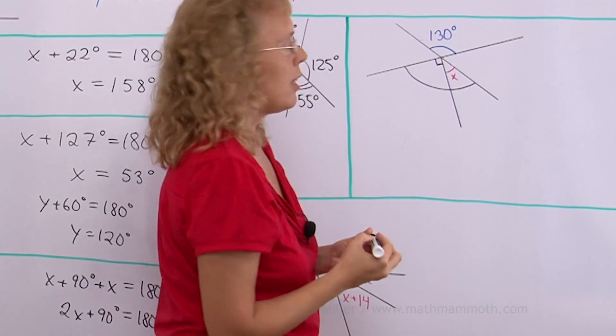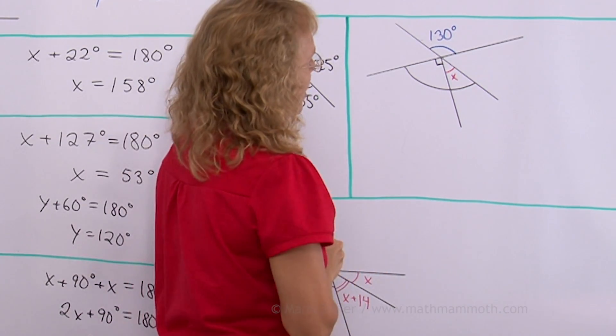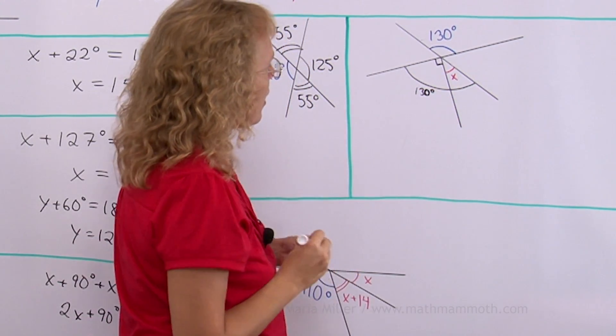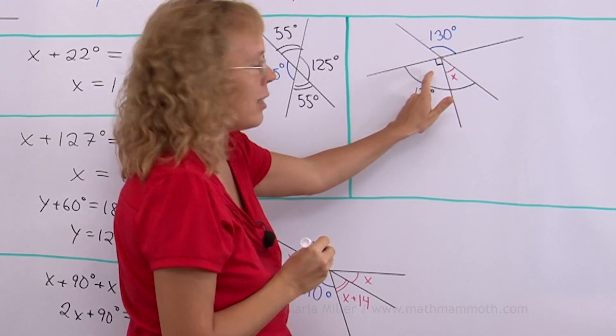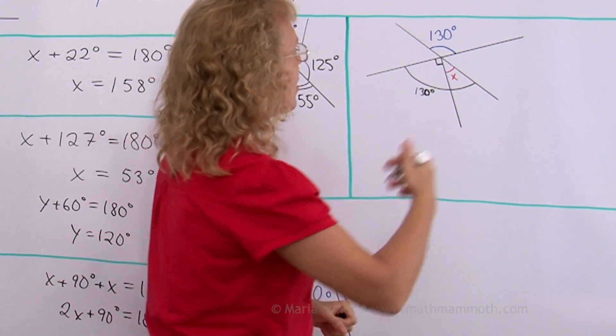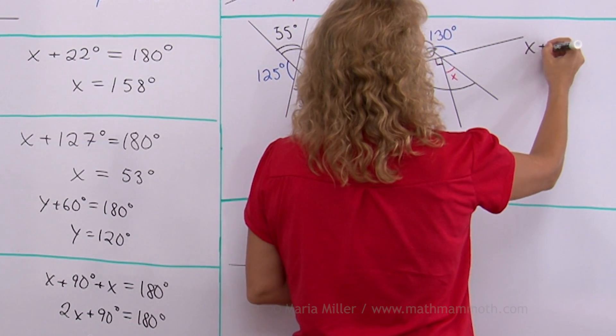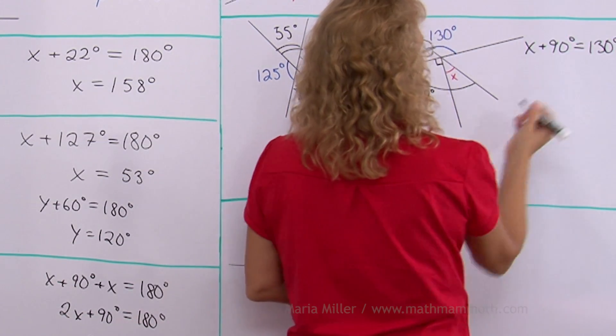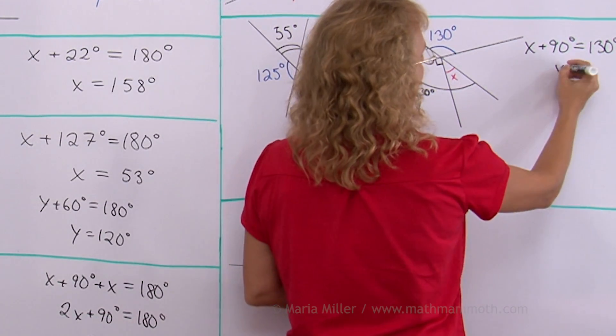This angle here is also 130 degrees. And then our unknown angle and a right angle together form 130 degrees. In other words, x plus 90 degrees equals 130 degrees. So x must be equal to 40 degrees.